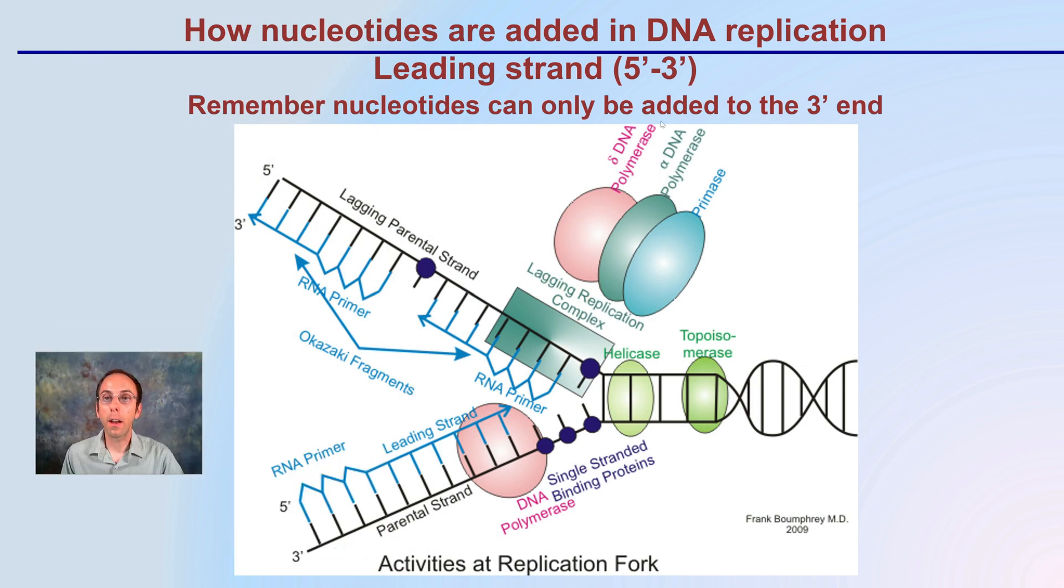Nucleotides are added in that 5 to 3 prime direction, they're only added to that 3 prime end. Here we see that 3 prime end is where they can be added and built going this way. This is going away from the replication fork and that's why this is our lagging strand and creating Okazaki fragments.